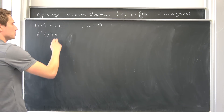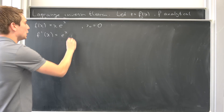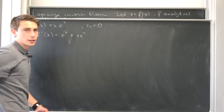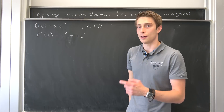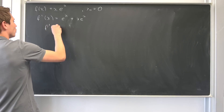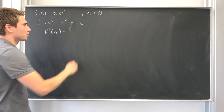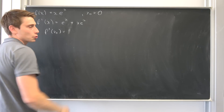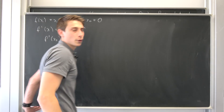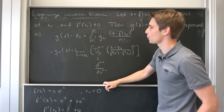So now we need to consider f prime. Differentiating both sides with respect to x, we need to use the product rule. Differentiating the first part gives e to the x, plus x times e to the x — differentiating x·eˣ, the exponential stays as is. If we plug in x₀ = 0, we get f prime of zero: e to the zero is just one, and the second term becomes zero. So we end up with one, which is not equal to zero — those conditions are already satisfied.